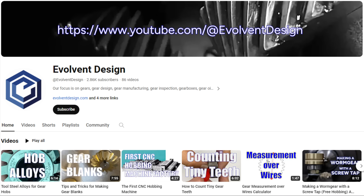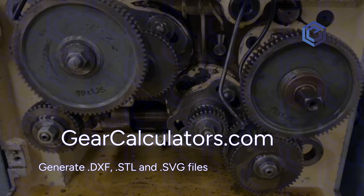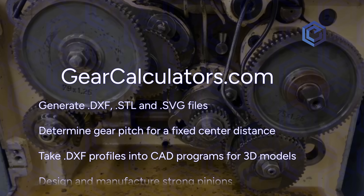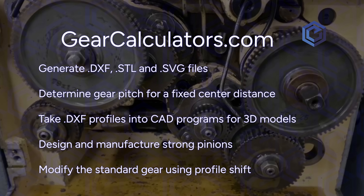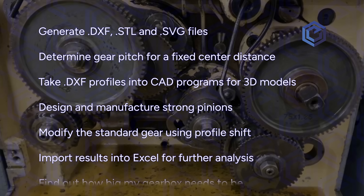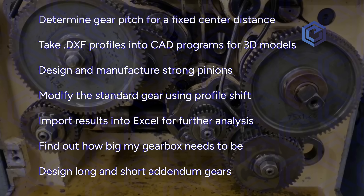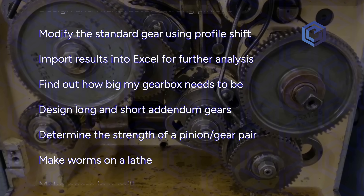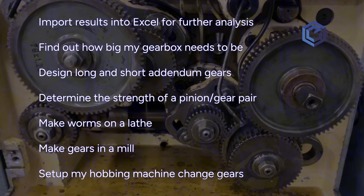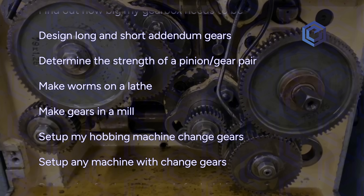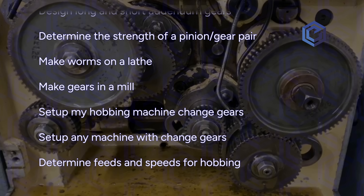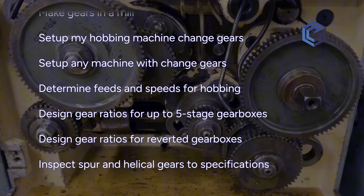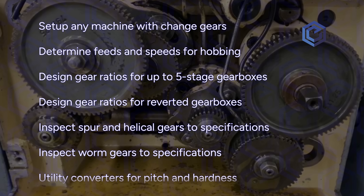We've shared a lot on YouTube and your feedback matches our experiences. Until now, it's been hard to find all the resources necessary to make a gear all the way from design through inspection — like generating DXF, STL, and SVG files; taking DXF files into your CAD program for 3D models; modifying standard gears using profile shift; designing long and short addendum gears; determining the strength of a pinion gear pair; making worms on a lathe; setting up hobbing machine change gears; determining feeds and speeds for hobbing; designing gear ratios for many gearbox types; plus inspection and a host of very handy utility tools.